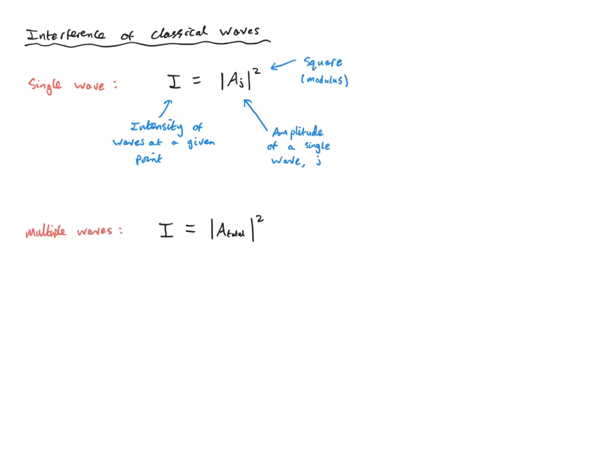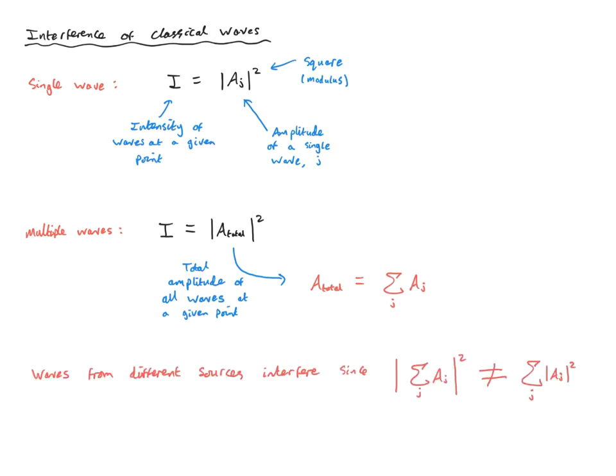If there are several waves coming in from different sources, we get a superposition, and therefore the sum of the wave amplitudes at a given point. But here's the catch: the intensity at a point is the square modulus of the total amplitude, and therefore we get interference effects, because the square of the sum is not equal to the sum of the squares. The sum of intensities for each individual wave is simply not the same as the total intensity, which is the square of the total amplitude. That's why we get interference effects.